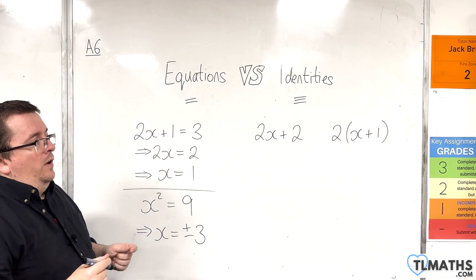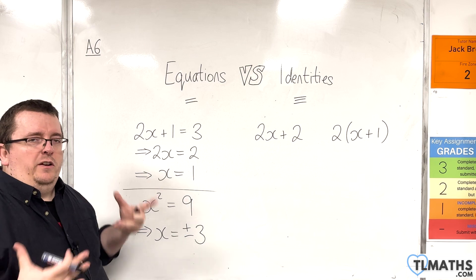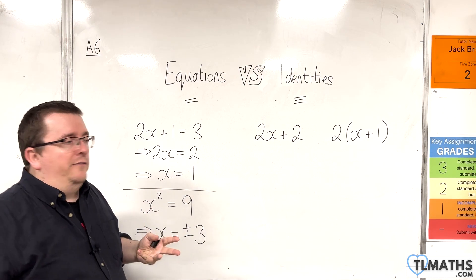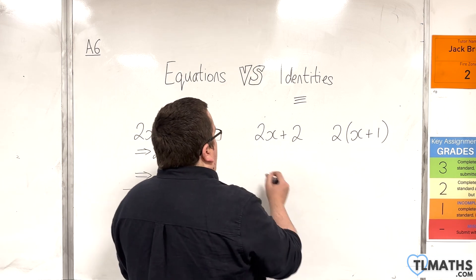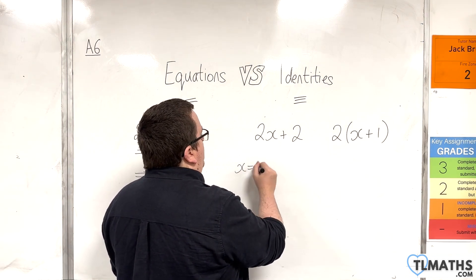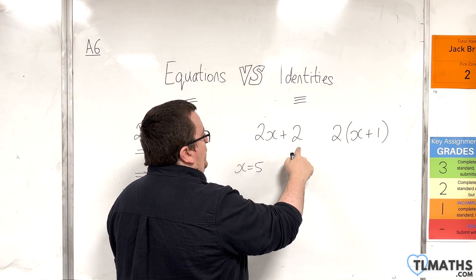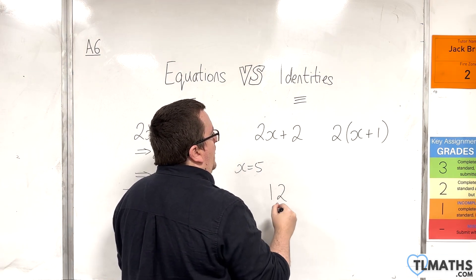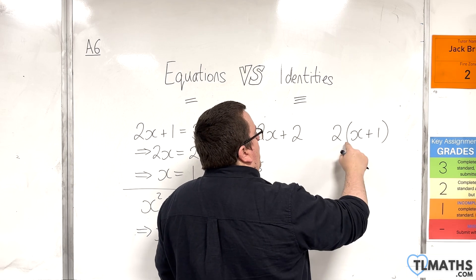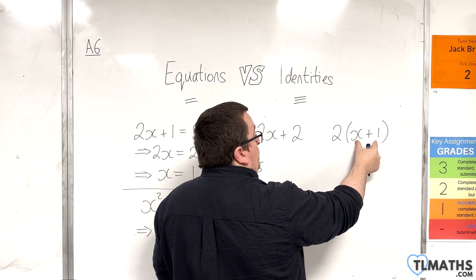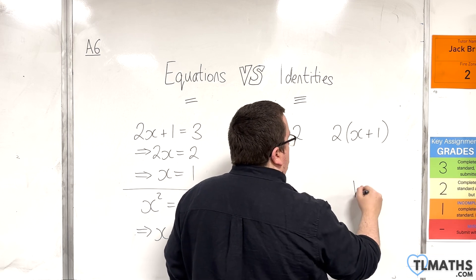Now, I could choose a value just to kind of test it. Obviously, testing just one value would never be enough. But we could test a value. So let's say we had x = 5, for example. Then on the left-hand side, I've got 2 lots of 5 plus 2, which is 12. And on the right-hand side, I've got 2 lots of (5 + 1). Now, 5 + 1 is 6. 2 lots of 6 is 12. And so I get precisely the same value.